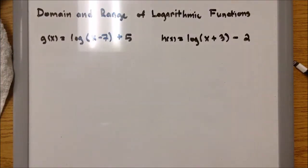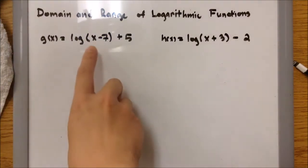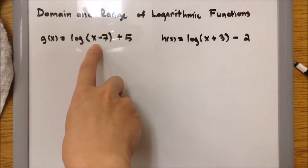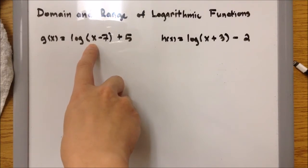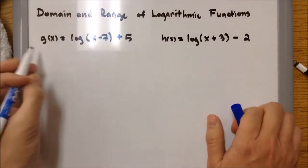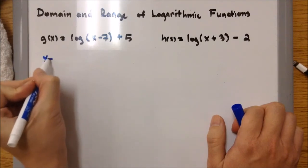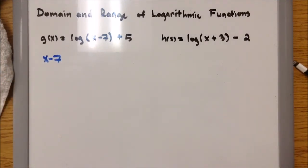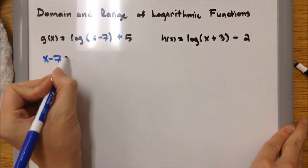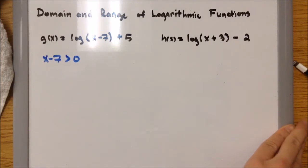When it comes to log, we have to be very careful — what's inside cannot equal 0 nor be a negative number. In this example we have x minus 7, and anything that comes from it cannot equal 0 nor be negative. The only possibility is positive numbers, so it has to be greater than 0. Anything from x minus 7 has to be greater than 0, and if that is true, then your function will be okay and it will work.